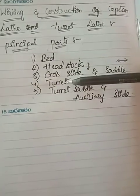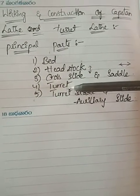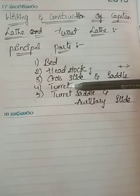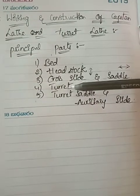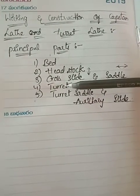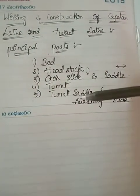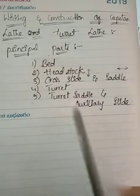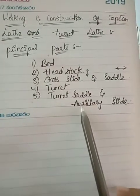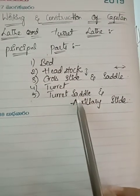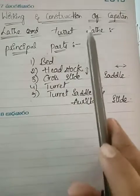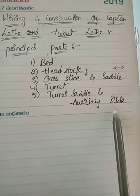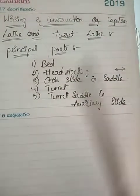The next part is called the turret, which replaces the tailstock. The last parts differ: a turret is added in the turret lathe, while an auxiliary slide is present in the capstan lathe.